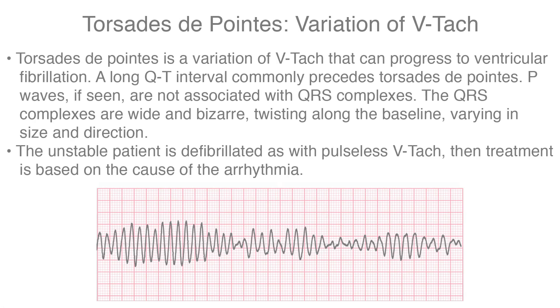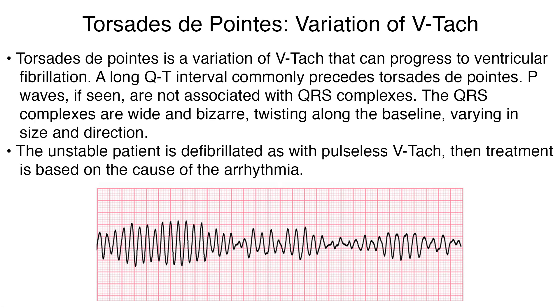Torsade de pointe is a variation of VTAC that can progress to ventricular fibrillation. A long QT interval commonly precedes torsade de pointe. P waves, if seen, are not associated with QRS complexes. The QRS complexes are wide and bizarre, twisting along the baseline, varying in size and direction. The unstable patient is defibrillated, as with pulseless VTAC, and then treatment is based on the cause of the arrhythmia.